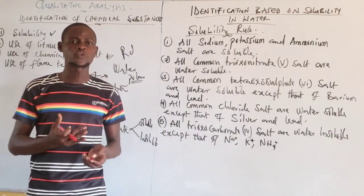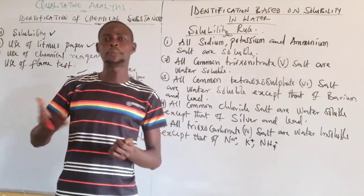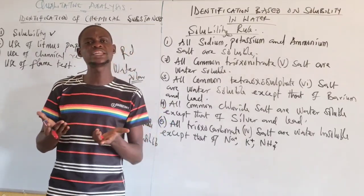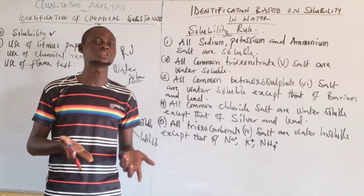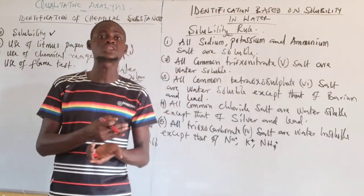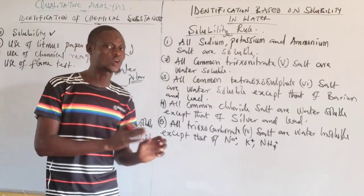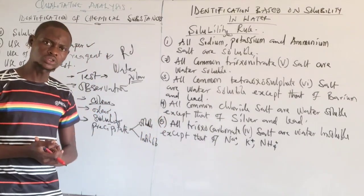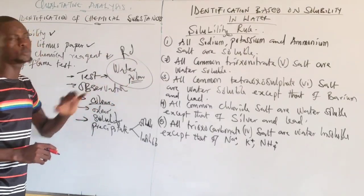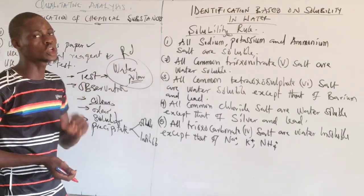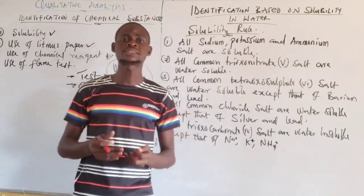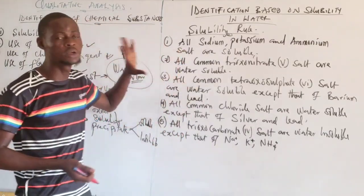Most substances in chemistry are either covalent or ionic. All ionic substances are polar in nature, so ionic substances will surely dissolve in water. Covalent substances can be polar or non-polar, depending on the kind of bond formed within them — whether they consist of a polar bond or a non-polar bond.